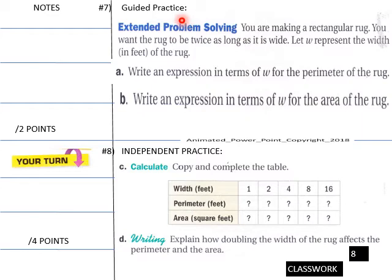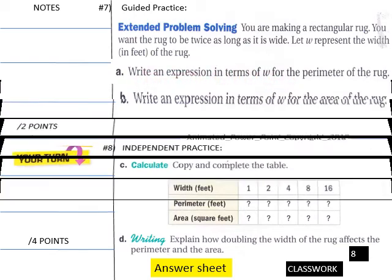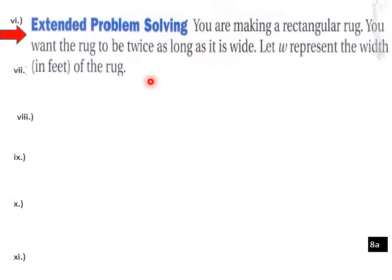This goes to our guided practice. You are making a rectangular rug and you want the rug to be twice as long as it is wide. Let W represent the width of the rug in feet. Part A: write an expression in terms of W for the perimeter of the rug. Part B: write an expression in terms of W for the area of the rug. Students, parts C and D are yours. Let's go into part A and find the perimeter.